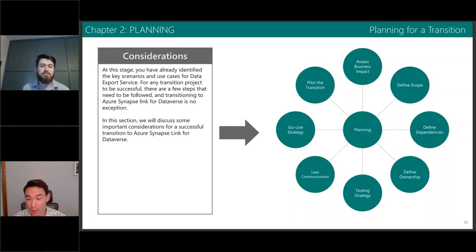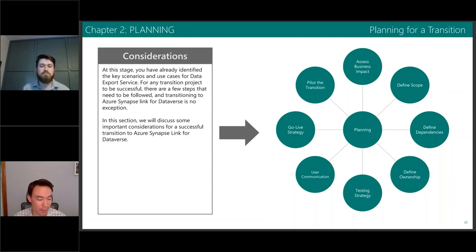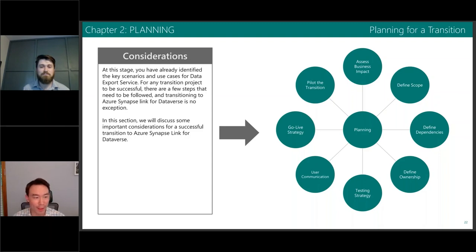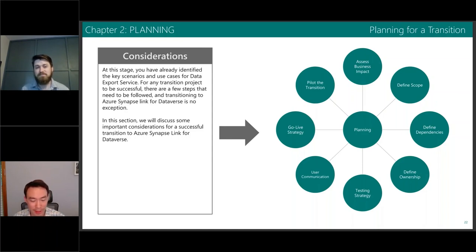Consider how you're going to communicate to the users — the data consumers. Track how you're doing on major milestones and come up with a go-live strategy. Determine when you cut over and how long you run in parallel with DES and the Synapse Link. Finally, pilot everything end-to-end before you make the full cutover and see how it goes.